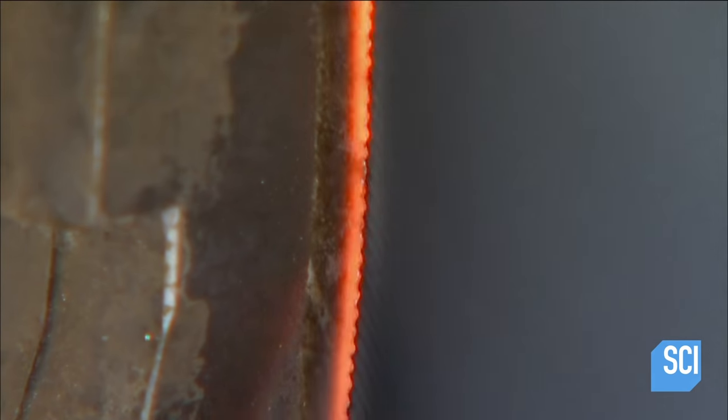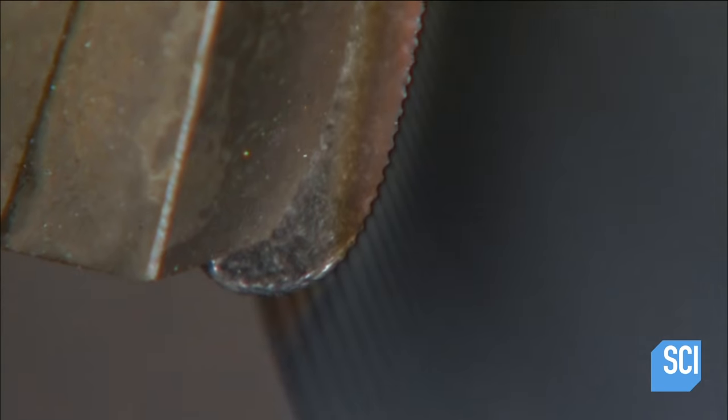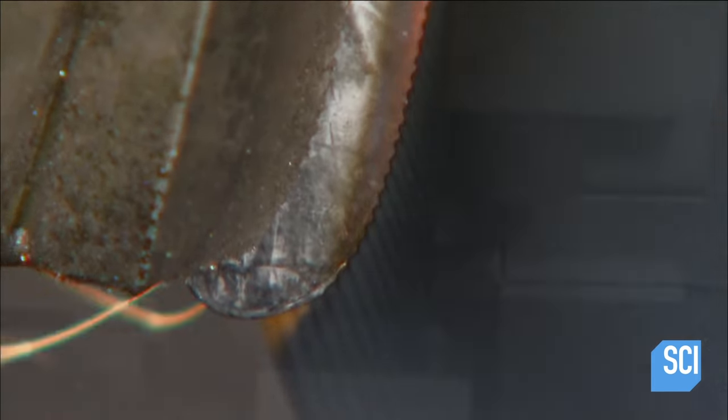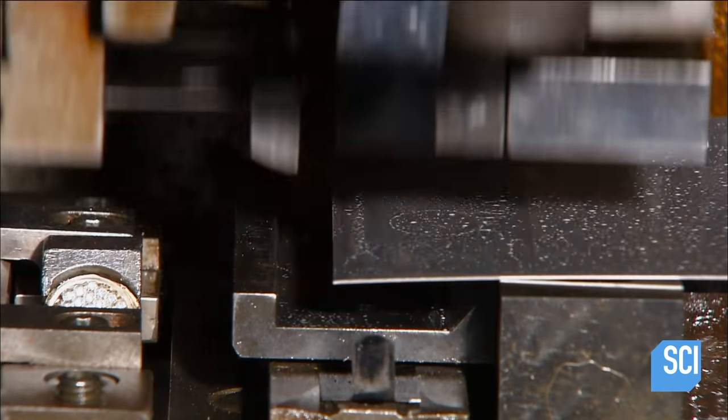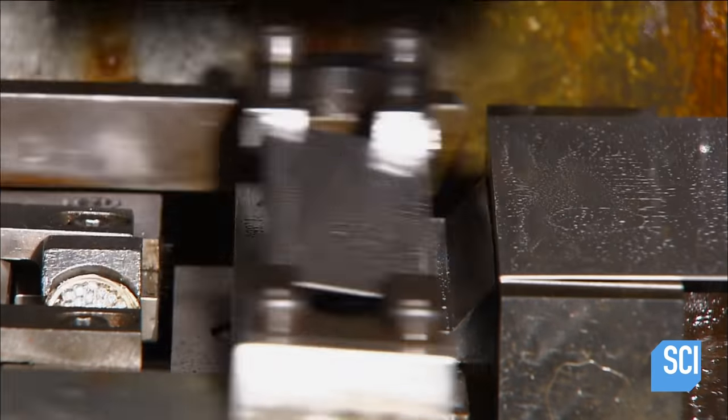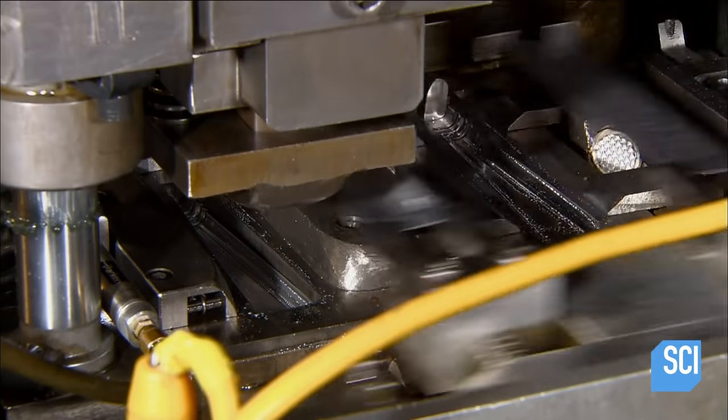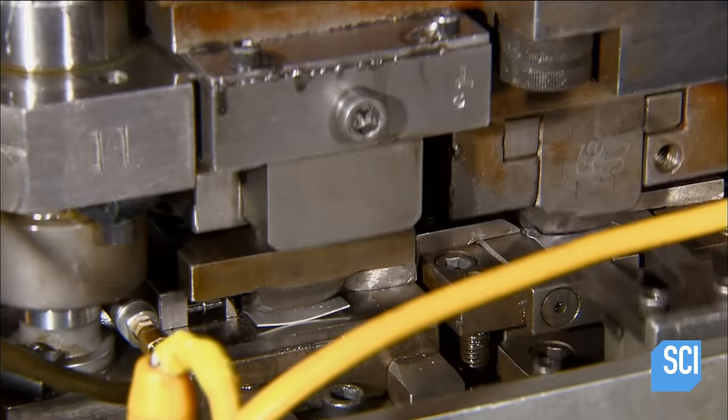The thicker back end gives the blade strength to withstand the pressure you apply when cutting food. The factory uses stainless steel with a higher nickel content for the knife handles. It has greater corrosion resistance and is easier to form.